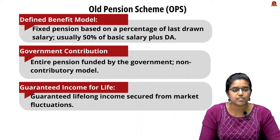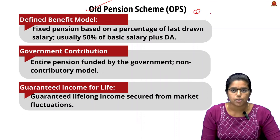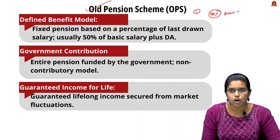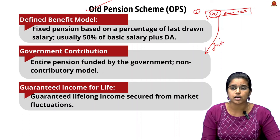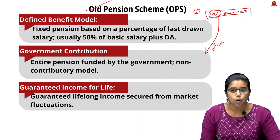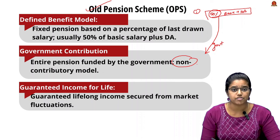Features of the Old Pension Scheme: First, it has a defined benefit model — a guaranteed amount at retirement based on the last drawn salary, typically 50% of the basic salary plus dearness allowance. Importantly, this fixed amount is totally contributed by the government with no contribution from the employee. This is why the OPS is called a non-contributory model.